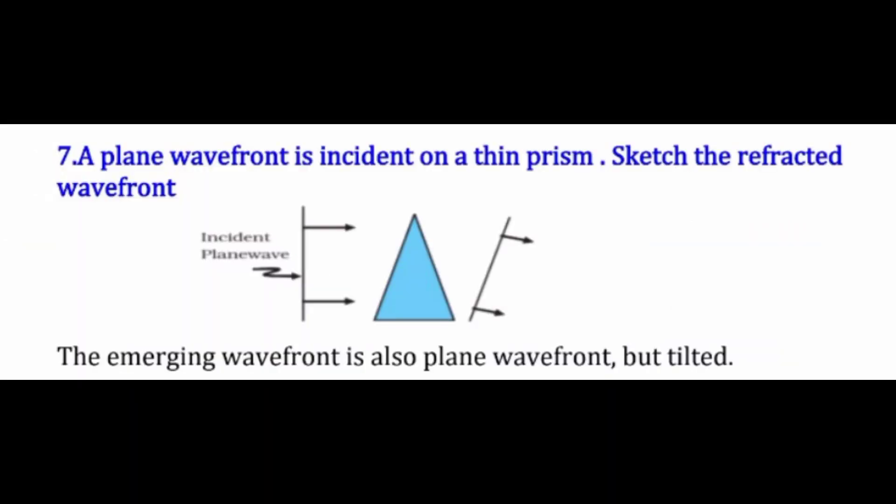The first question is: a plane wavefront is incident on a thin prism — sketch the refracted wavefront. So here we have to draw the refracted wavefront of a plane wavefront incident on a thin prism. We have an incident plane wave passing through a prism, and the output is a plane wavefront but it is tilted.